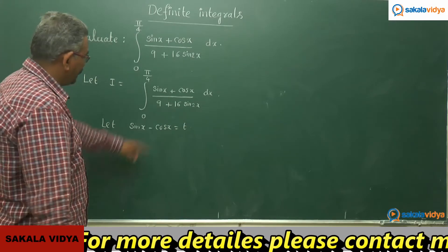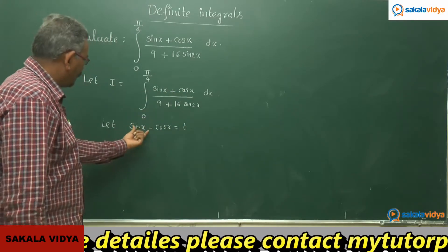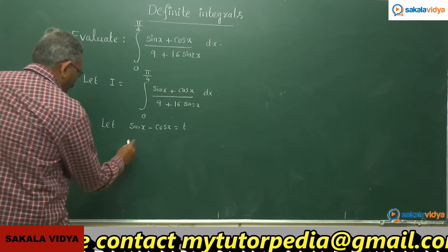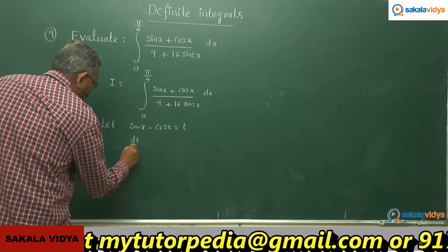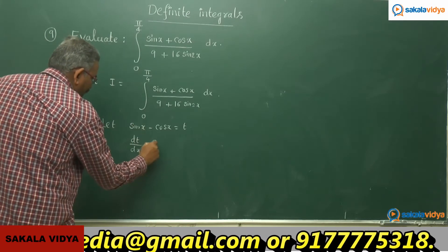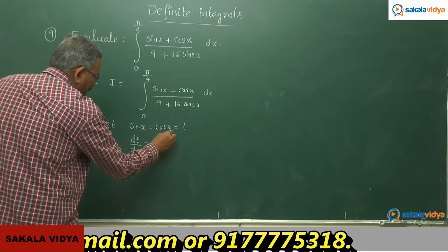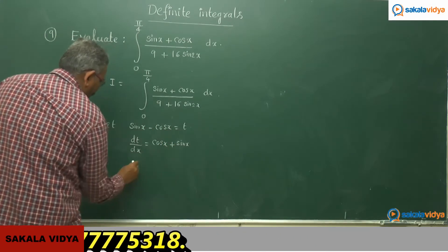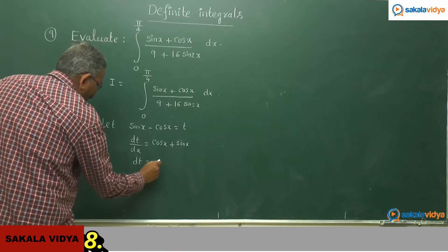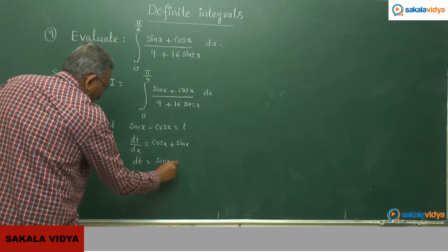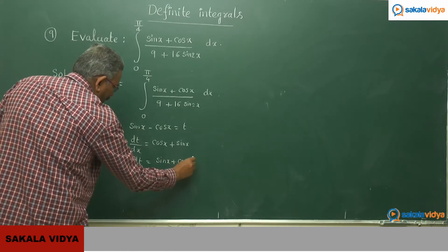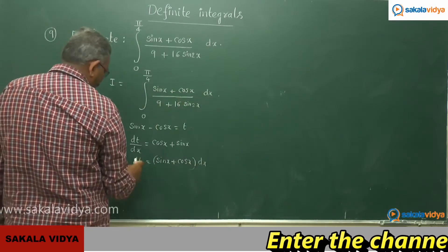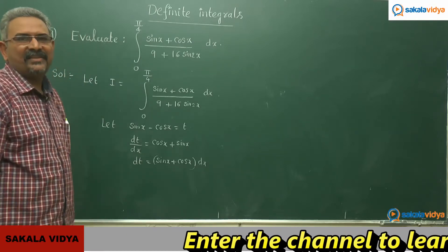In order to get sin x plus cos x, we set sin x minus cos x = t. Differentiating: dt/dx = cos x minus (minus sin x) = cos x plus sin x. Therefore, dt = (sin x plus cos x) dx. This sin x plus cos x dx is now replaced by dt.